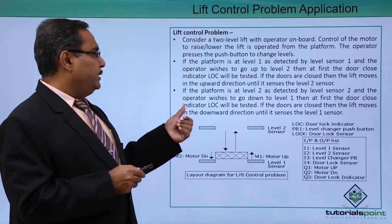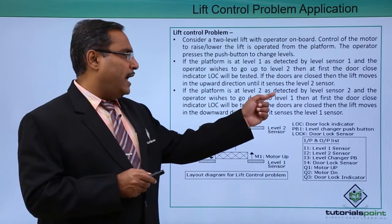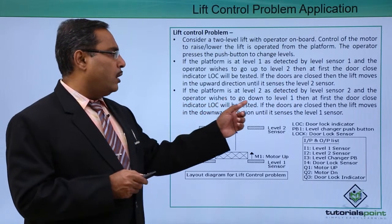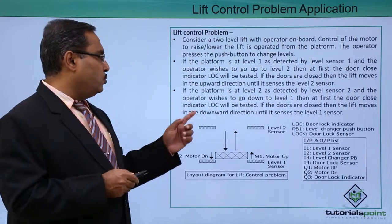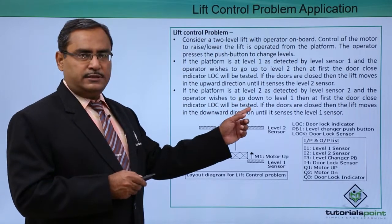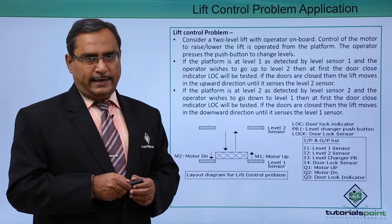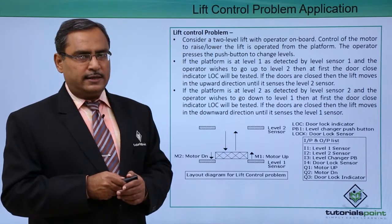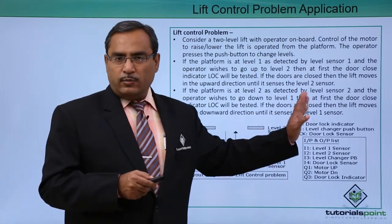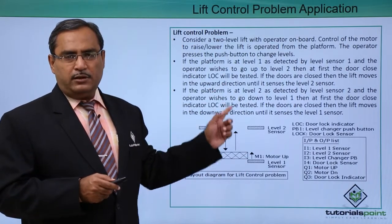In the reverse direction, when the platform is at level two as detected by level sensor two and the operator wishes to go down to level one, the door close indicator (LOC) will be tested first. If the doors are closed, the lift moves in the downward direction until it is sensed by the level one sensor.